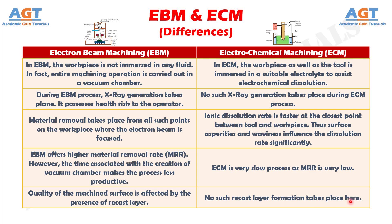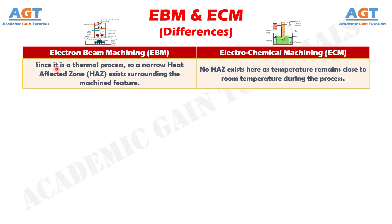Number 11: Since electron beam machining is a thermal process, a narrow heat affected zone exists surrounding the machined feature, whereas no heat affected zone exists in electrochemical machining as temperature remains close to room temperature during the process.